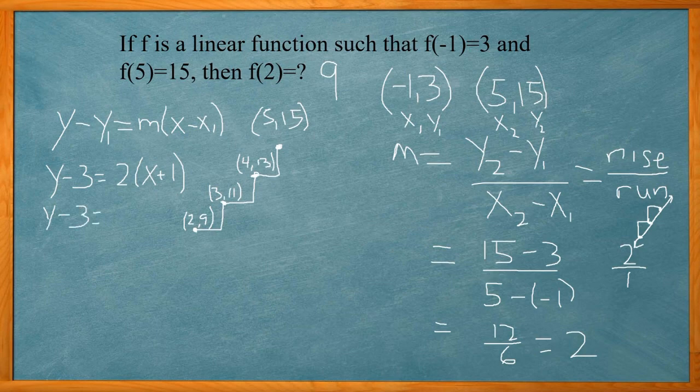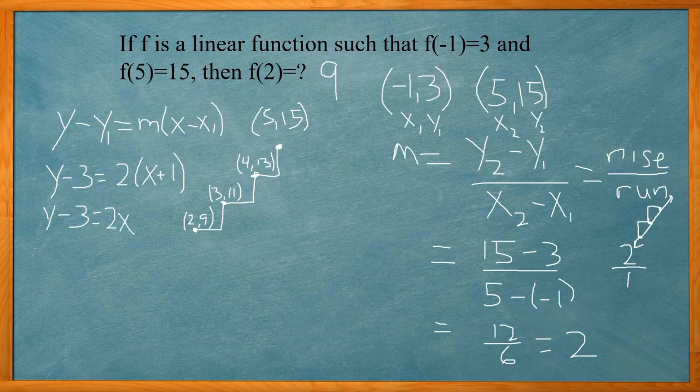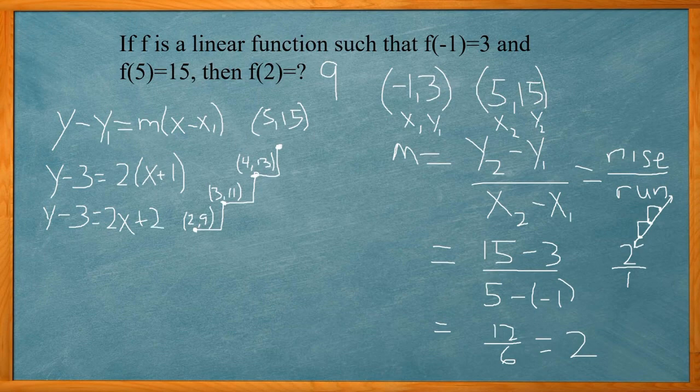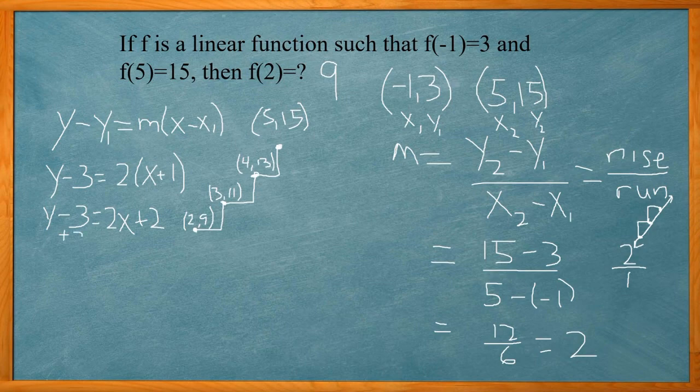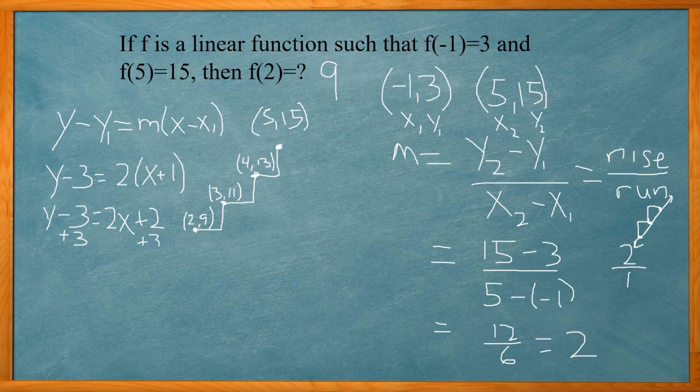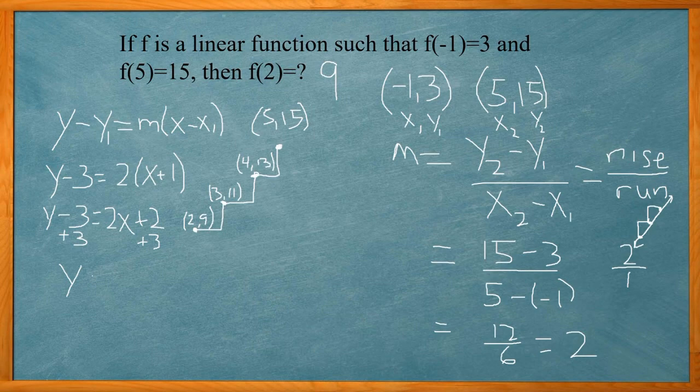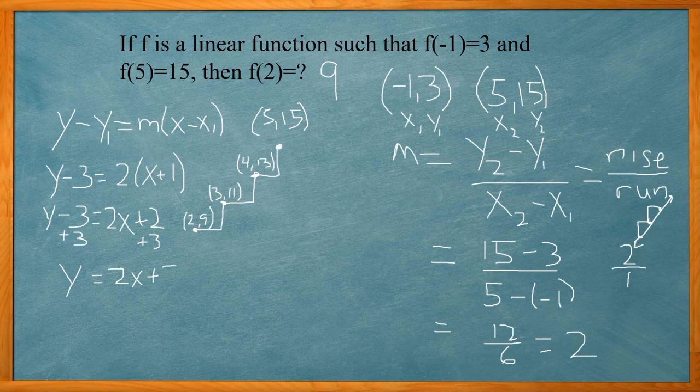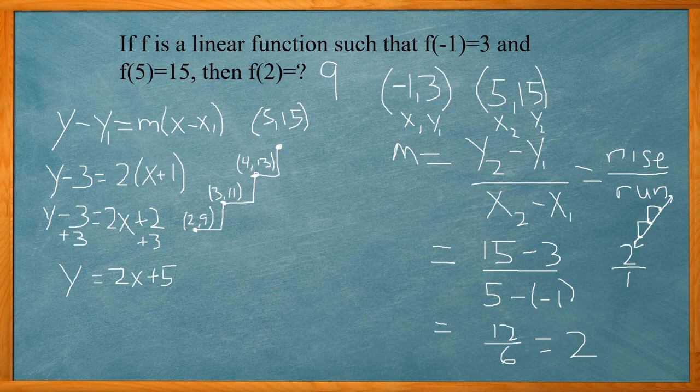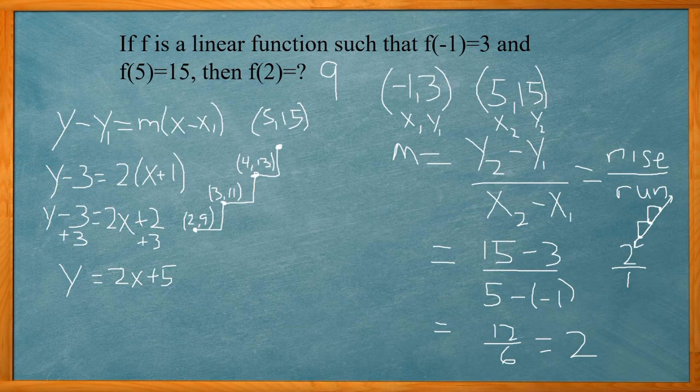Our slope, we calculated as that being 2. And then we plugged in negative 1 for x1. So that's going to become plus 1 because two negatives gives us a positive when we're multiplying. Now from here, I can distribute the 2, 2 times x is 2x, and 2 times 1 is 2. Now my goal is to get the y by itself. So I want to add 3 on both sides. So that disappears on the left-hand side. And I'm going to add 3 to the like term over here, 2 and 3 can add together. So y equals 2x plus 5. And this would be the equation of our line using the two points that they gave us, negative 1, 3 and 5, 15.